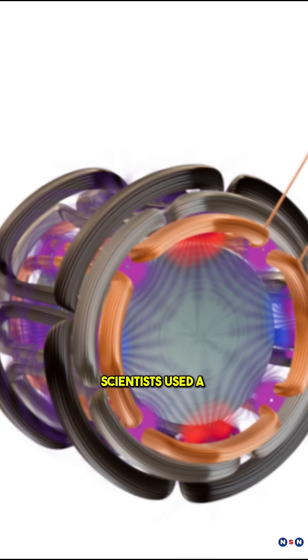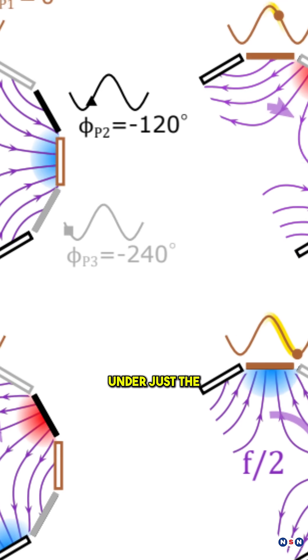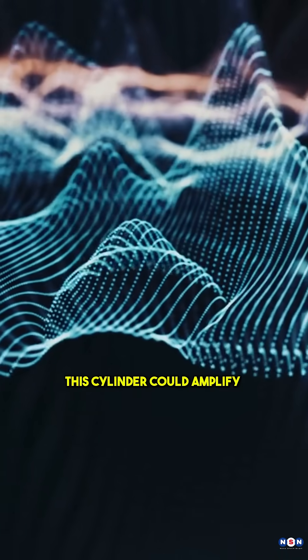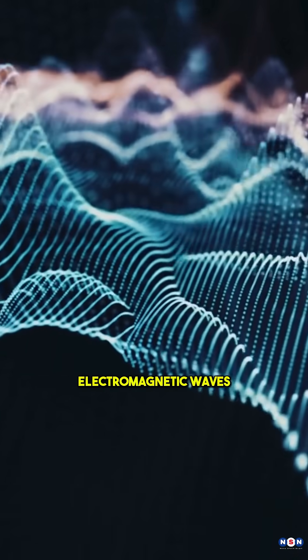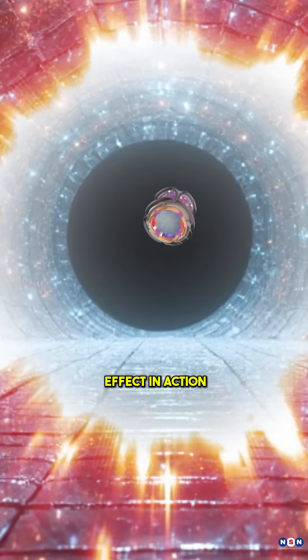Instead of a black hole, scientists used a spinning metal cylinder. They discovered that under just the right conditions, this cylinder could amplify electromagnetic waves, pulling energy from its own rotation. That's the super radiance effect in action.